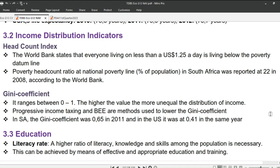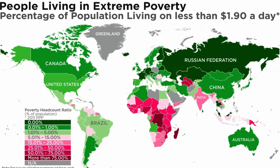Let's jump over to income distribution indicators. Under this we will cover head count index and the Gini coefficient. Head count index is a simple measure used to assess poverty. It represents the proportion of the population living below the poverty line, typically defined by a certain income threshold or basic needs. Looking at a map of Africa, India, and other areas, the World Bank states that everyone living on less than $1.90 a day is living below the poverty datum line.